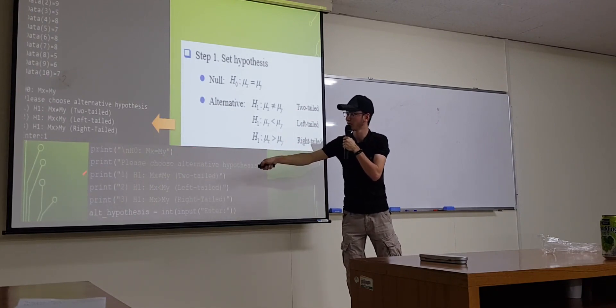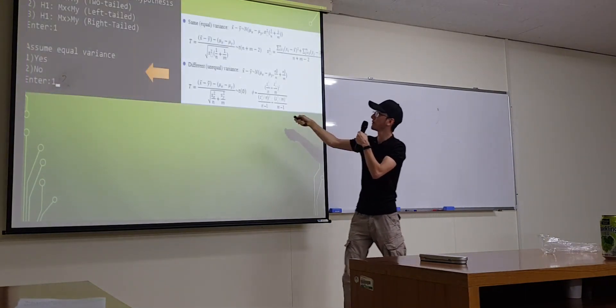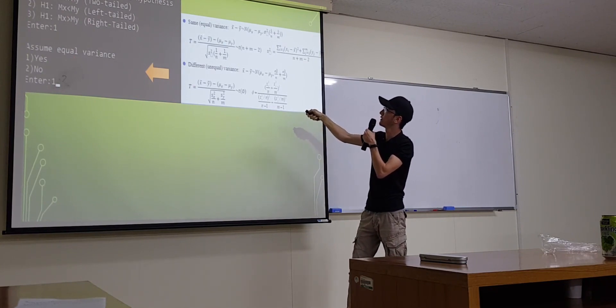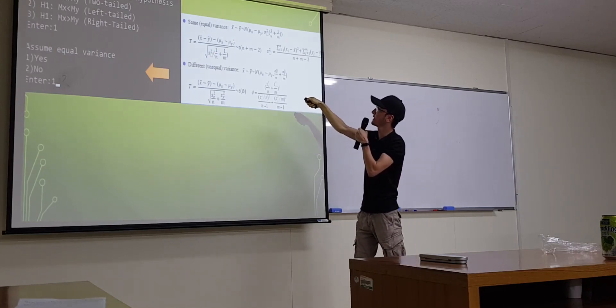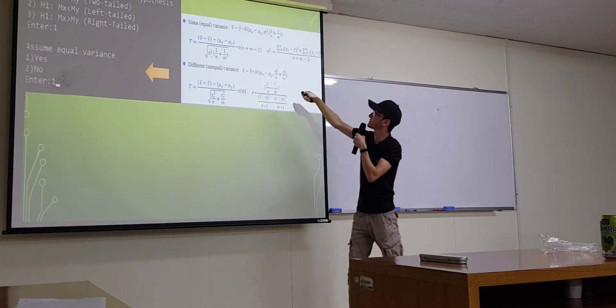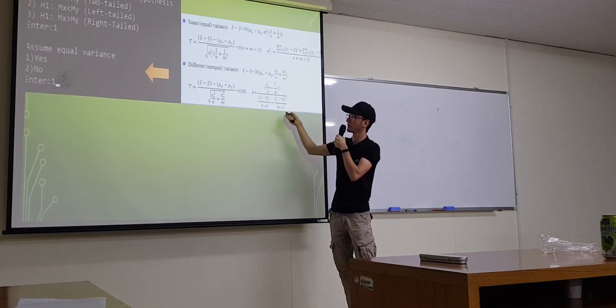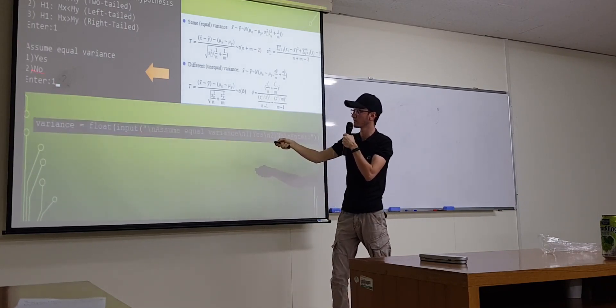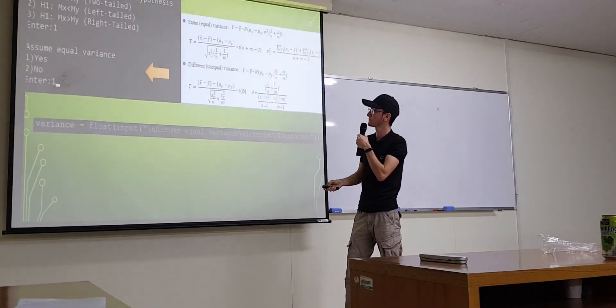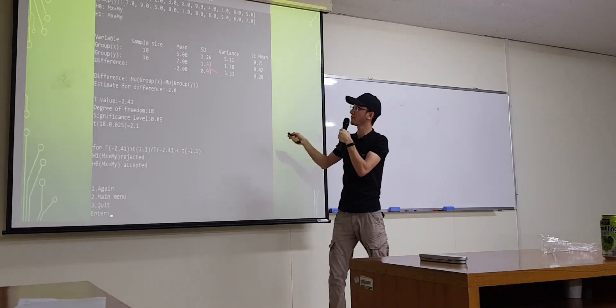This is the code. Print functions are printing these texts. Here, we have two variances. Same equally variance and different unequally variance. If we have same variance, we should use this formula, you know, in order to get this, in order to get degree of freedom. However, in the different variance, we should use this. So, we made two choices. Yes or no. If yes, we entered yes here. So, we will use what? Same equal variance.